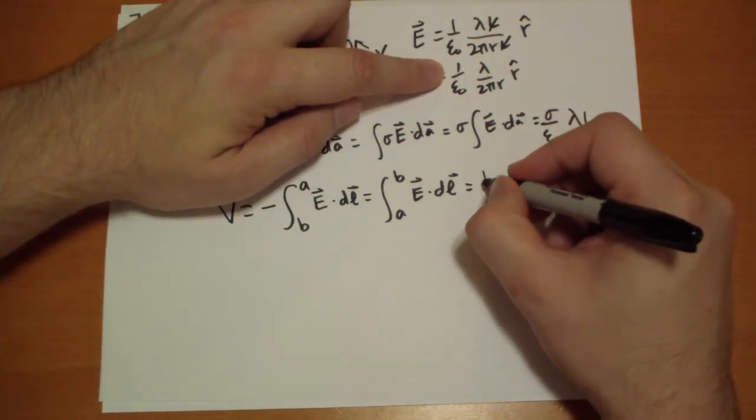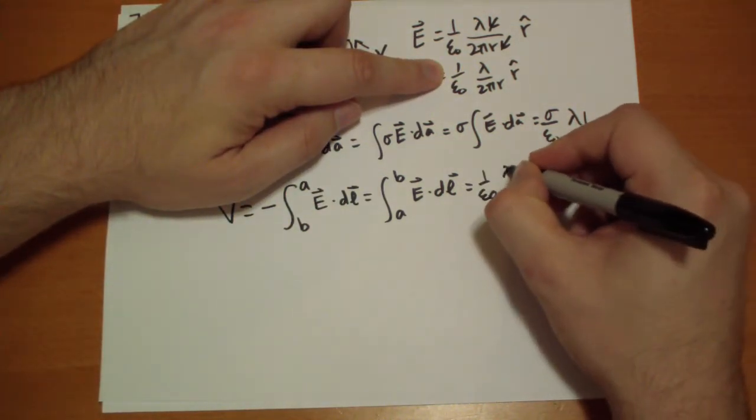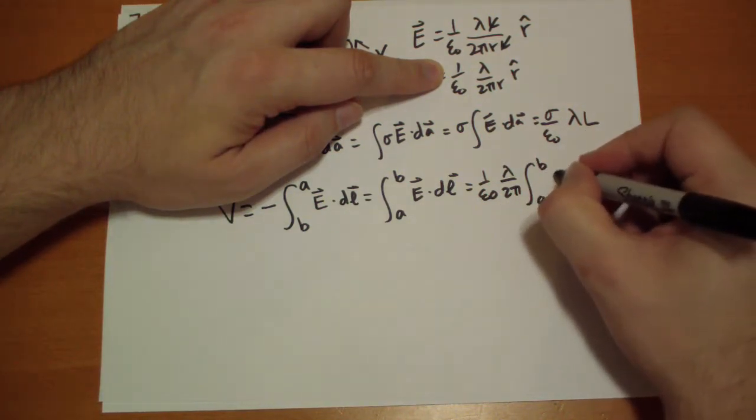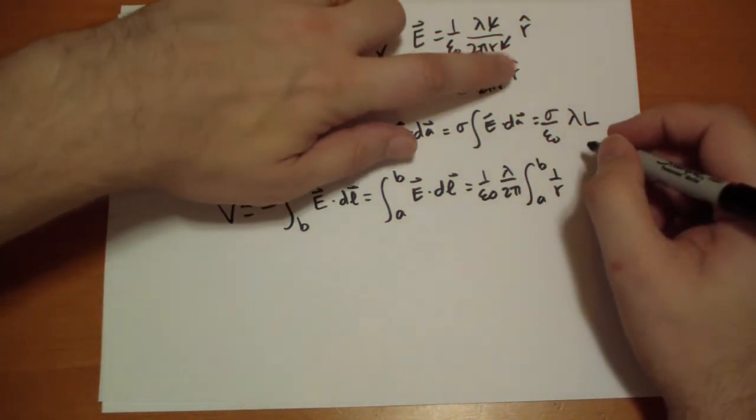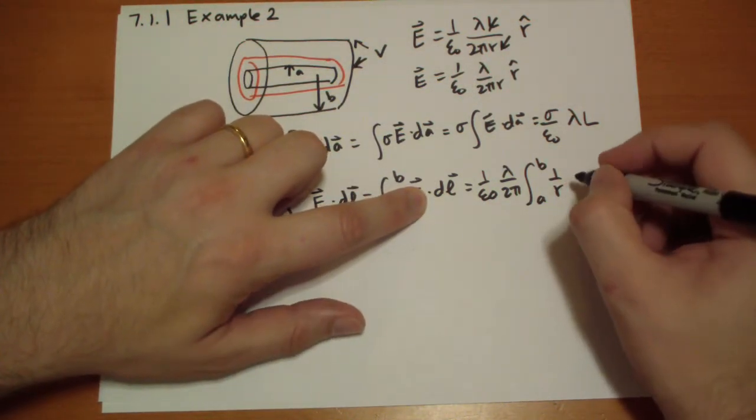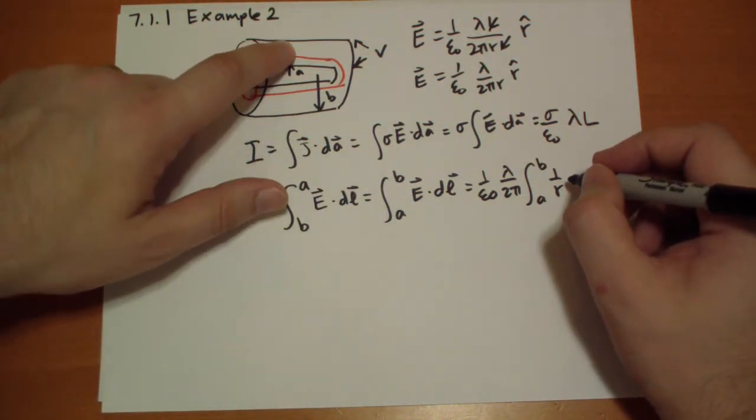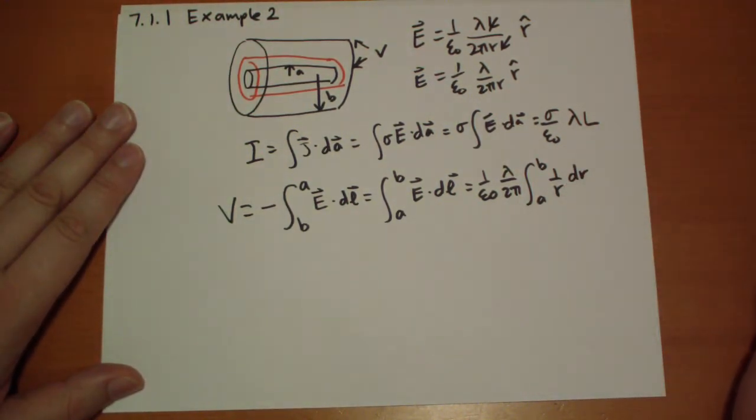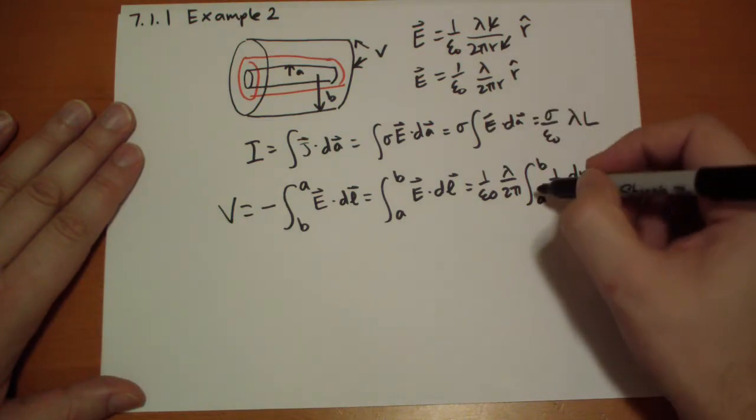So what does this look like? Well, the E vector is given up here. So it's one over epsilon naught. This is all constant. Lambda over 2π. And then integral from B to A of one over R. And it's in the R-hat direction, dot the DL. Well, DL is just DR R-hat. So we get that right there for the dot product of this and the DL.